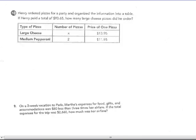On the next page, another good problem that has, and they've already set up the table for you, another good problem that has value or money involved in it. So the type of pizza, Henry ordered pizzas for a party and organized the information into a table. If Henry paid a total of $93.65, how many large cheese pizzas did he order? Well, if it costs $13.95 for one large cheese pizza, how many did he order? So I'm going to add on to this and just put a total column here. So $13.95 times each large pizza would be, I don't know how many there were, $13.95X.